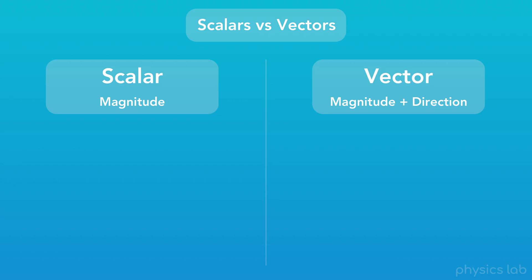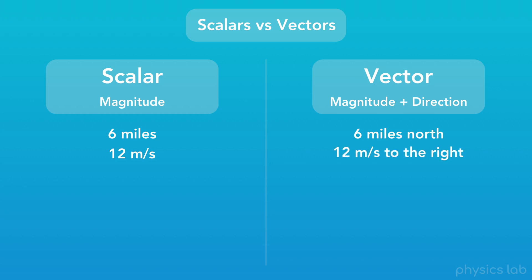So what does that mean? Well, scalars are what we're mostly used to. For example, 6 miles is a scalar quantity, and 12 meters per second is a scalar quantity. On the other hand, 6 miles north would be a vector, or 12 meters per second to the right would also be a vector.